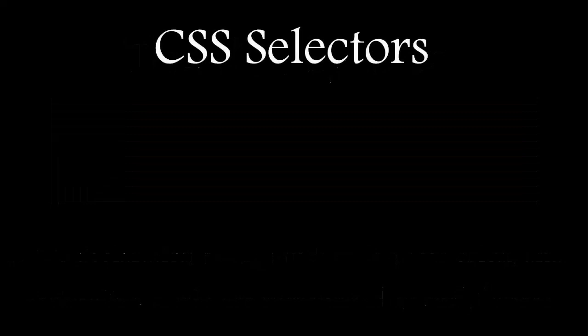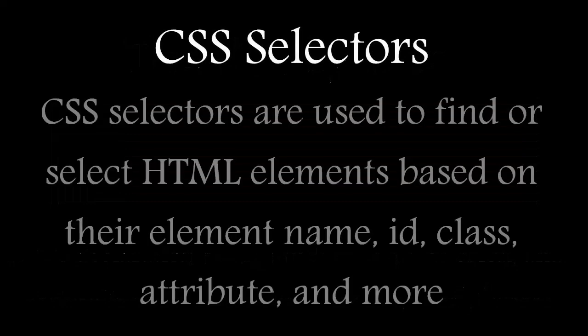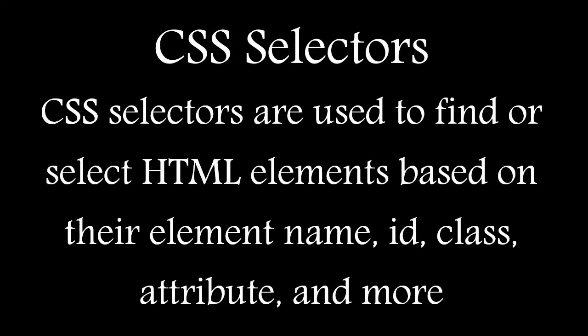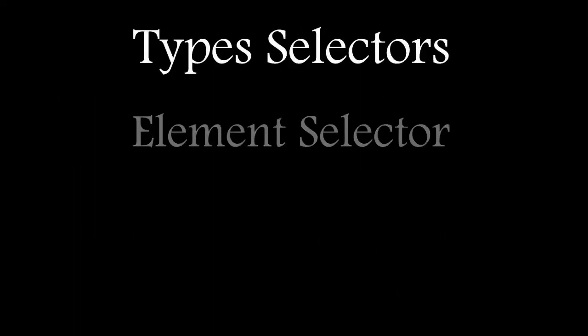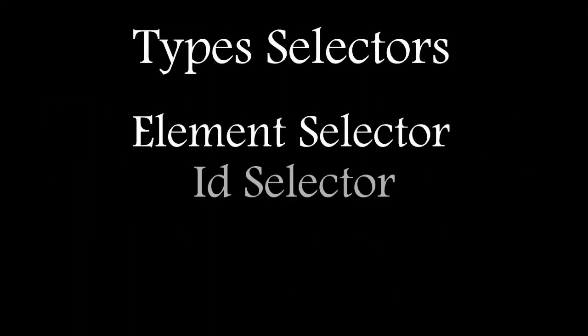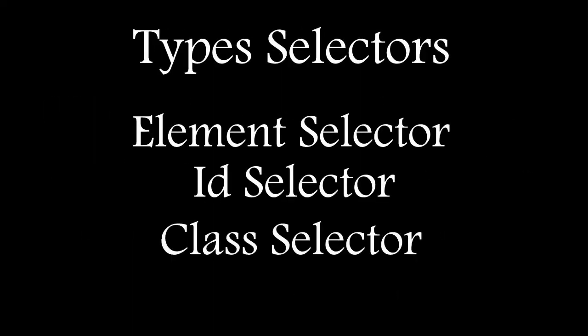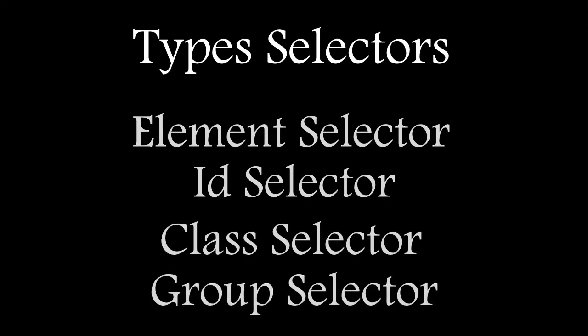CSS selectors are used to find or select HTML elements based on their element name, ID, class, attribute, and more. The types of selectors are: element selector, ID selector, class selector, and grouping selectors.